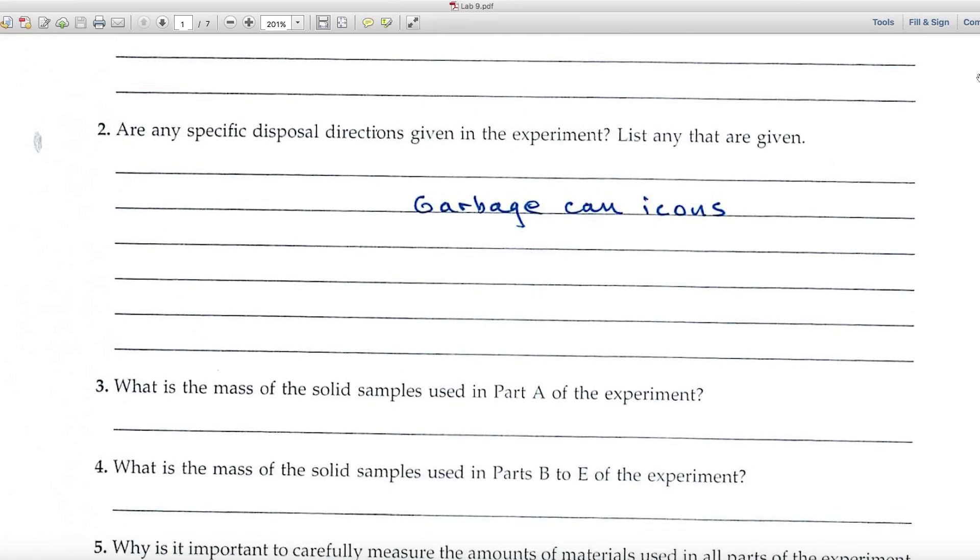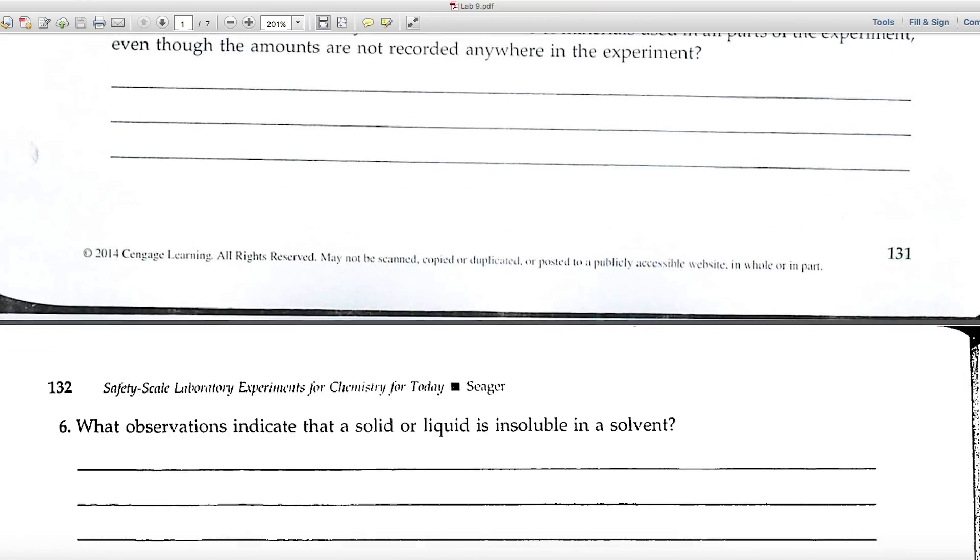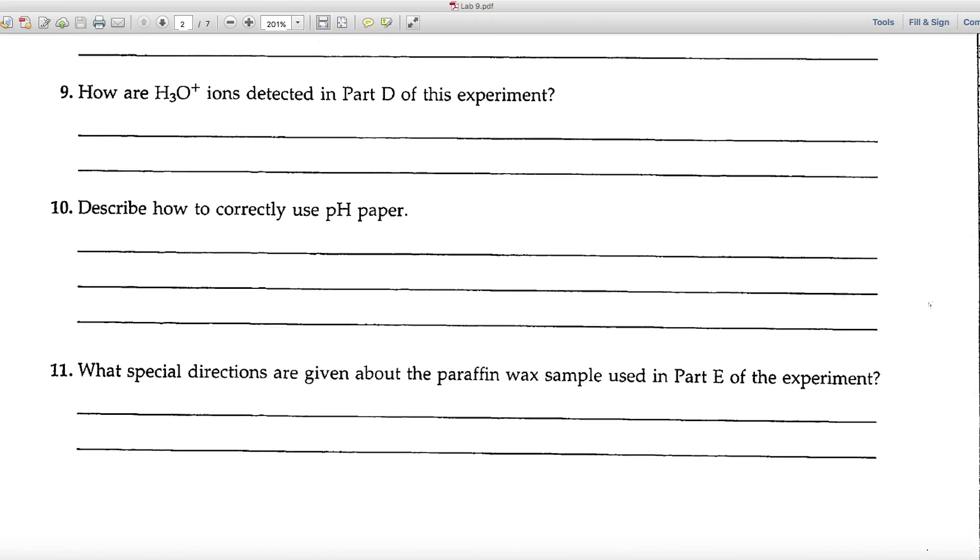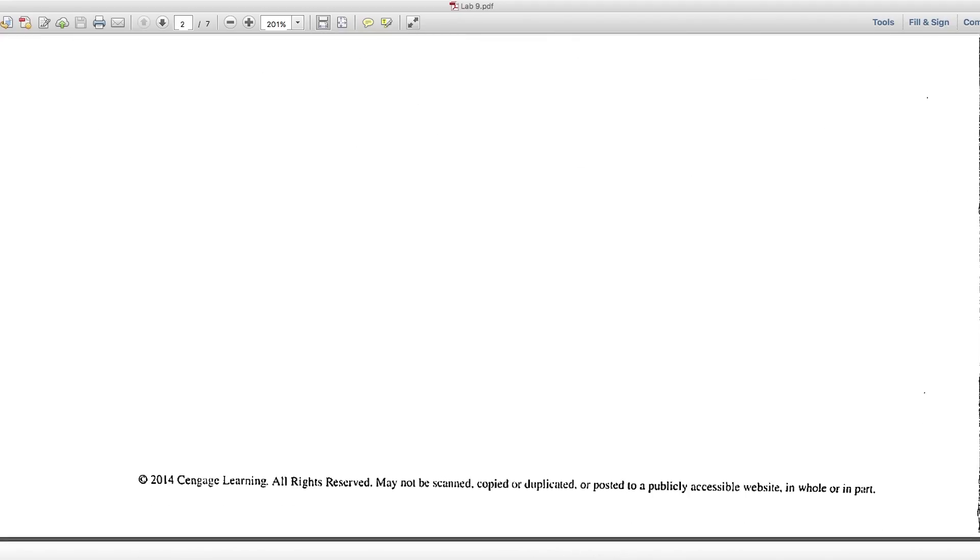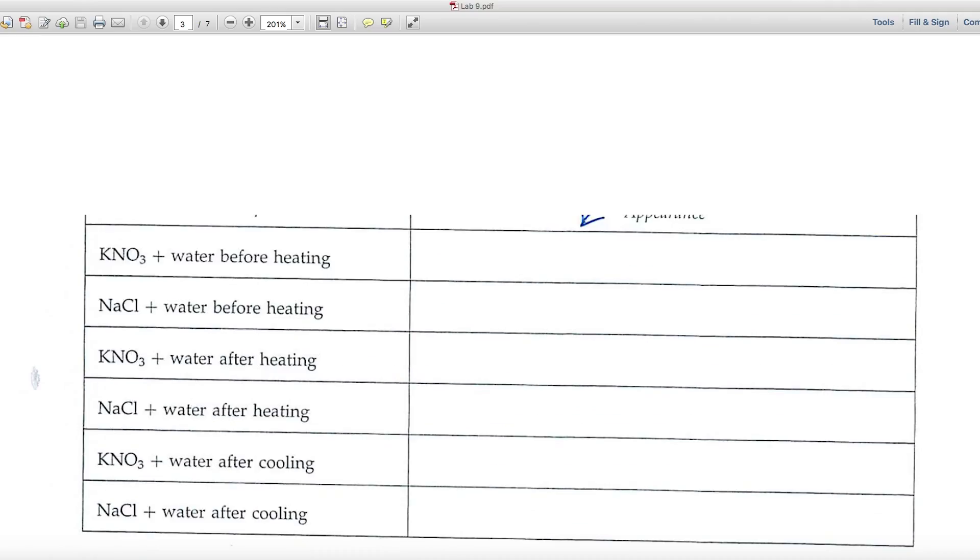Number two, specific disposal directions. Look for the garbage can icons. There's lots of room here, so that's your hint that there'll be some of those. And the rest of these questions are pretty straightforward. I don't think you'll have any difficulty.